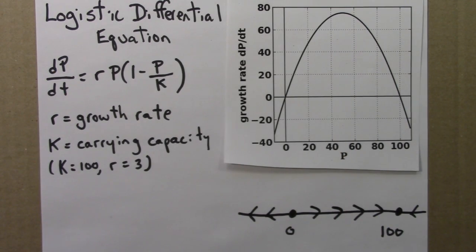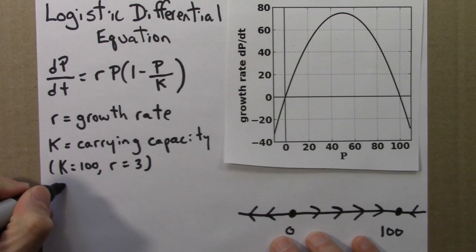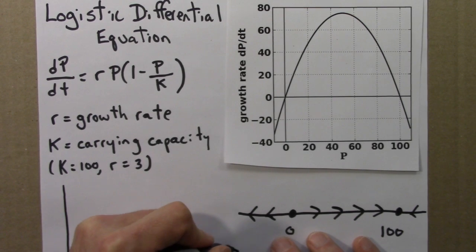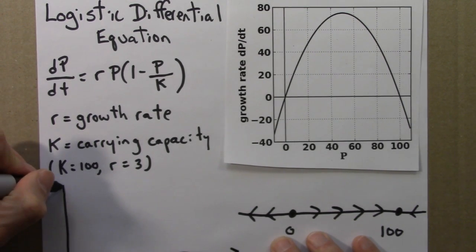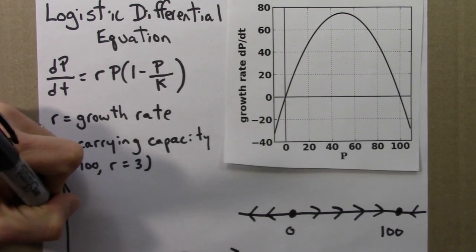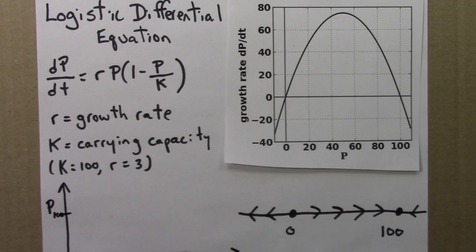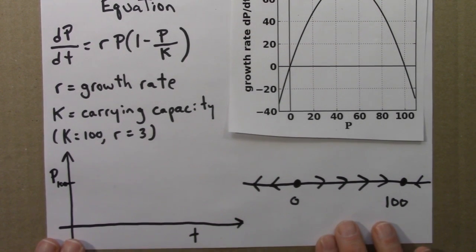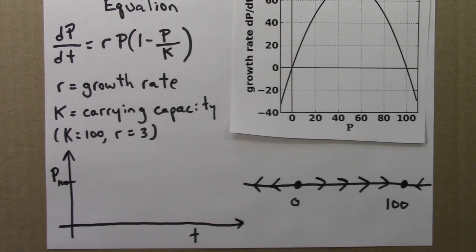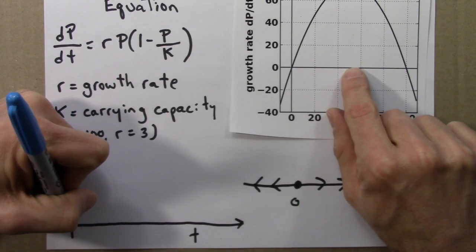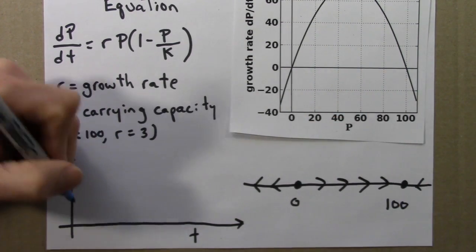So, this is the phase line for this differential equation. We can also sketch solutions to the differential equation. And a solution, in this context, is the population as a function of time. We know that 100 is a fixed point. I'll draw some solution curves in blue. If we start at around 20, we would increase. We would increase rapidly, keep increasing until we get to 100.